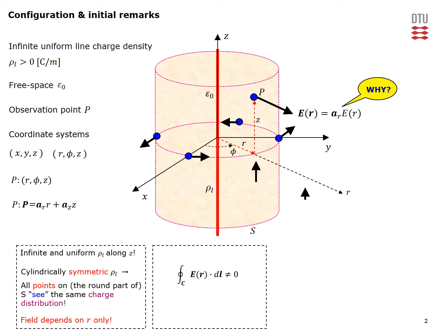Now consider a z component at a particular point pointing along z. A little further away it also points along z, but it must decay with distance from the line charge — indicated by the shorter arrow. Imagining a rectangular closed curve, the existence of these z components would produce a non-zero circulation, which is impossible for electrostatic fields. Therefore there is no z component, and the field has only a radial component whose magnitude depends only on the radial distance.